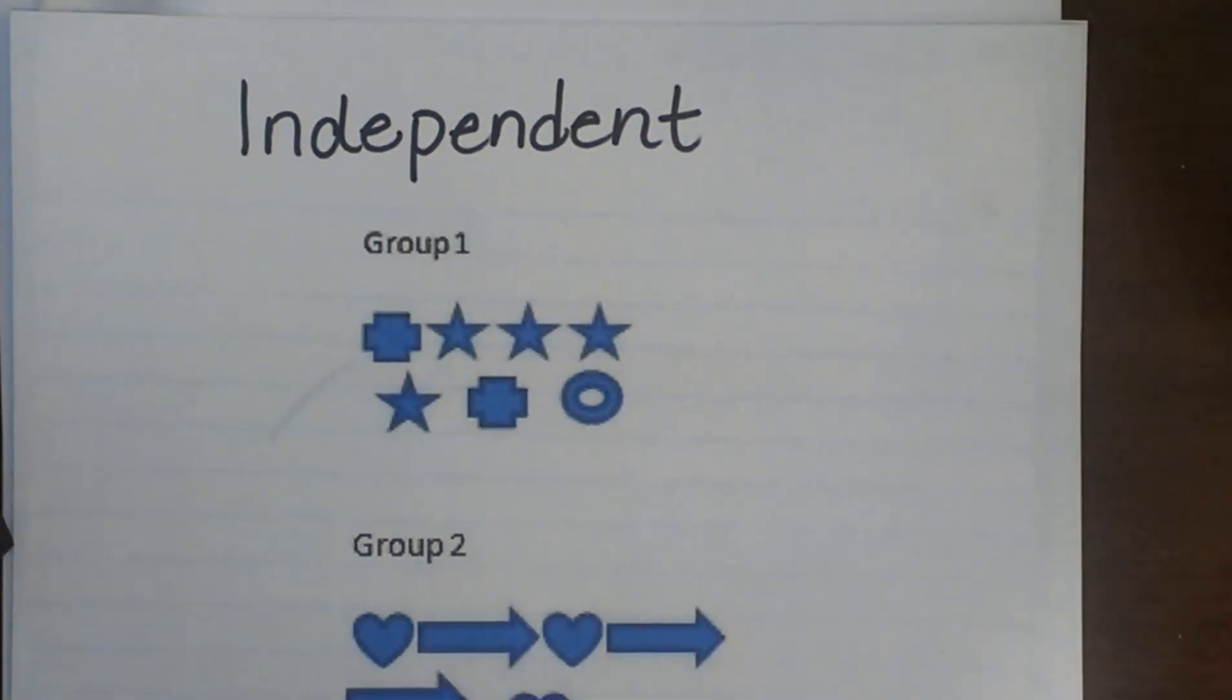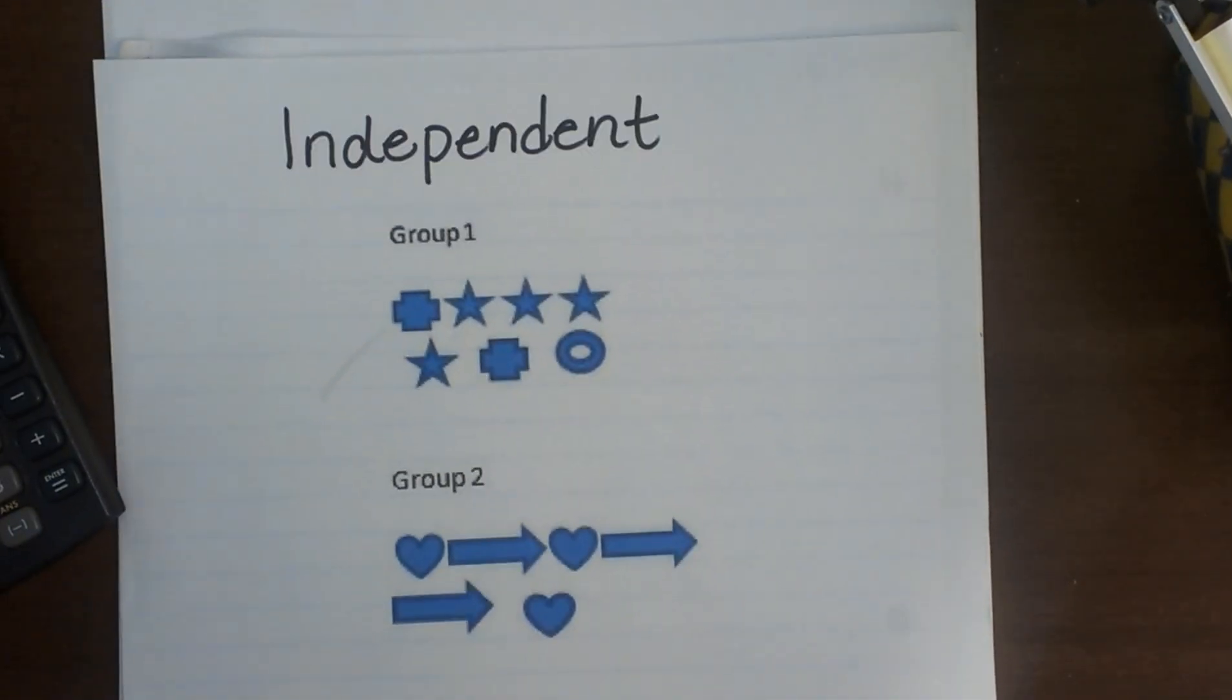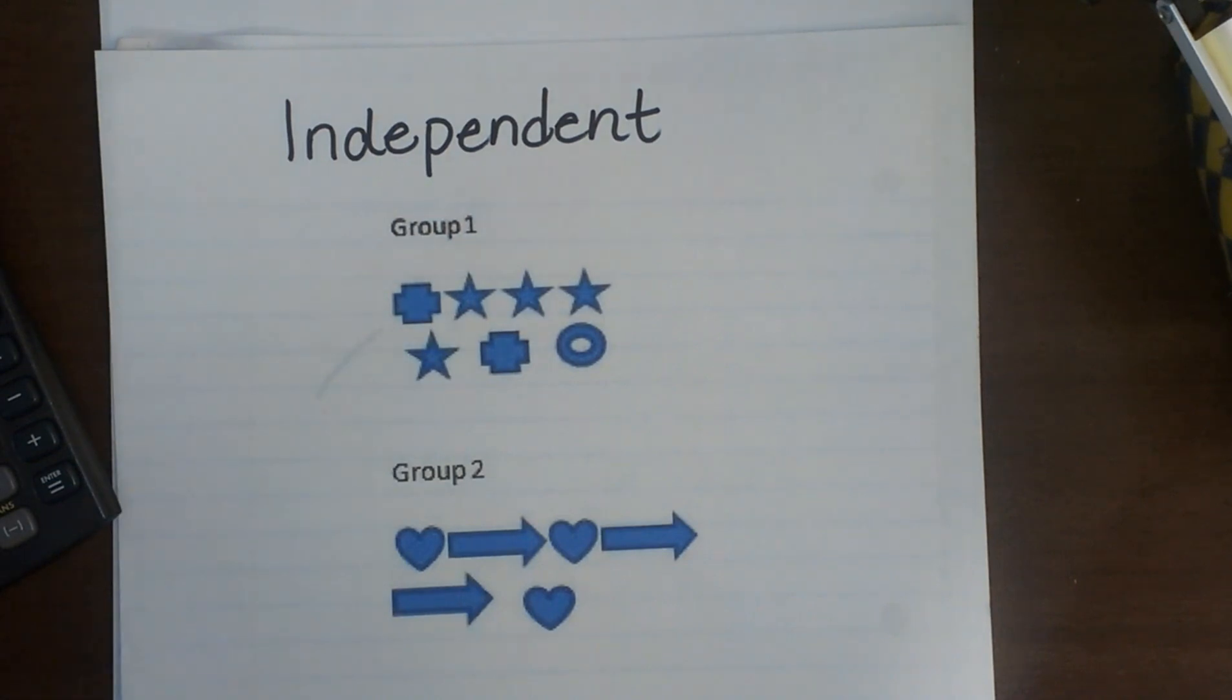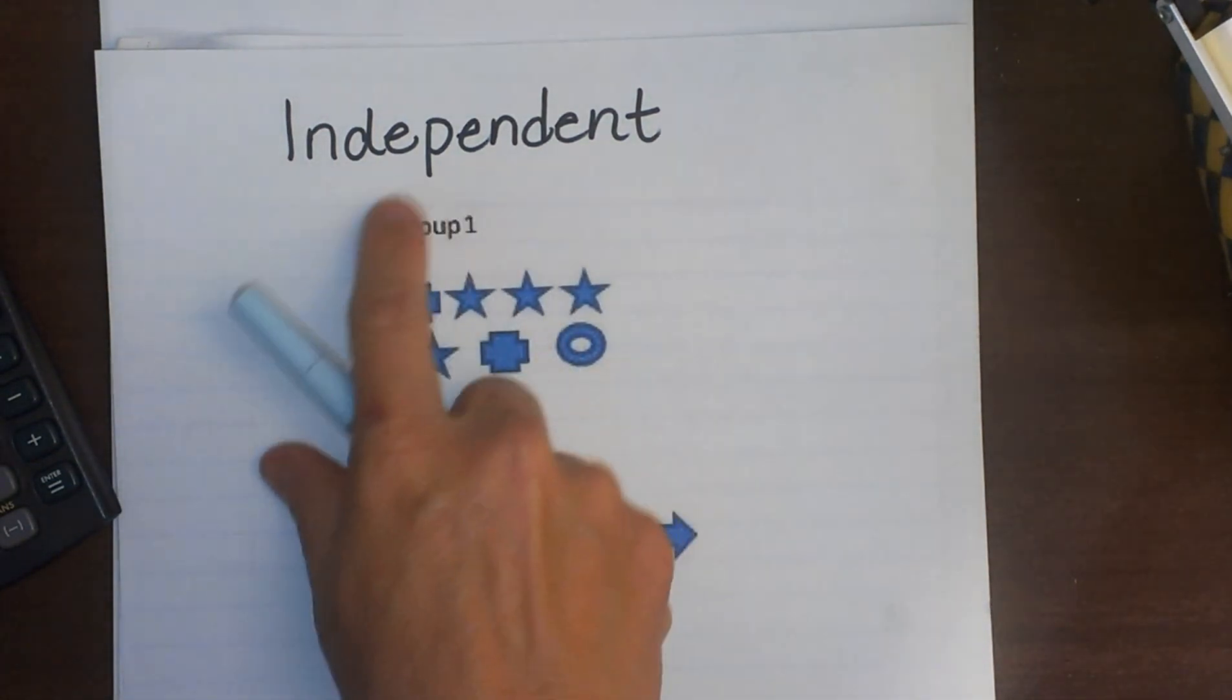Welcome to Moo Moo Math. Today we are going to look at some independent probability events. What we are going to do is we have two groups.